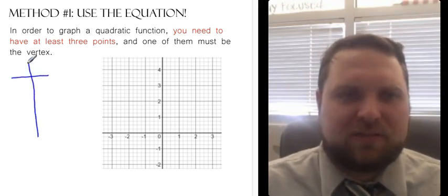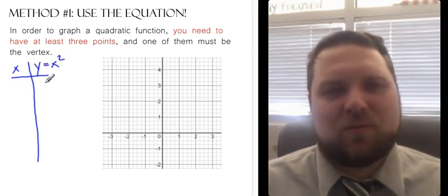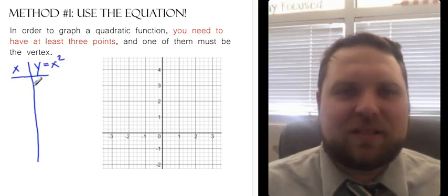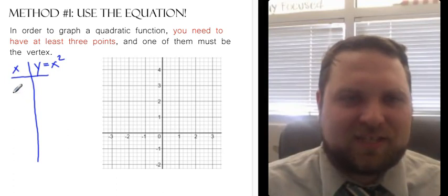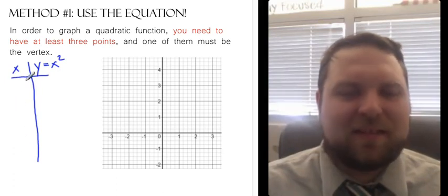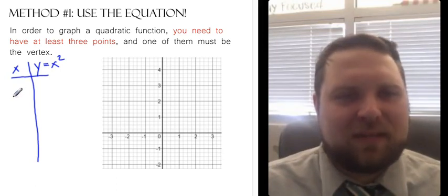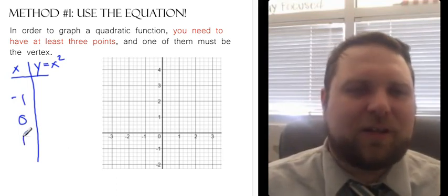So here's what I'm going to do. I'm going to create a chart with x values and y values. Except we know what the y value is supposed to be. It's supposed to be x squared. And so here what I can do is I can pick any three x values I want and figure out what the y value has got to be. So let me pick three very simple ones. Negative 1, 0, and 1.